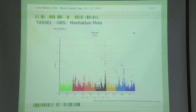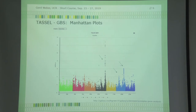Another question about reading the Manhattan plot: there are three peaks pointed to with arrows, but there are other peaks visible too. How do you know the quality of the association? That will be addressed in further detail.